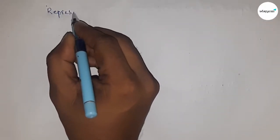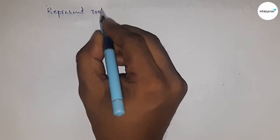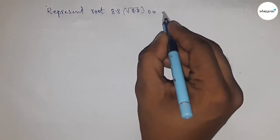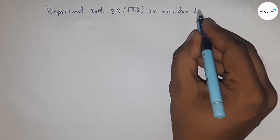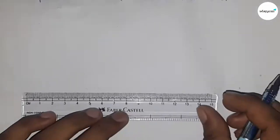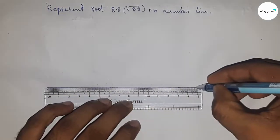Hi everyone, welcome to SSR classes. Today we're talking about how to represent root 8.8 on a number line. In this video, we'll be representing root 8.8 on the number line. Let's start. First, draw a line of any length - this is the AX line. Next, take a length of 8.8 centimeters using a scale.